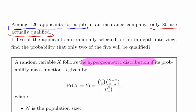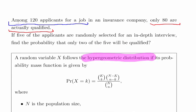This is a case of using the hypergeometric distribution. N is the total population size and K is the total sample size of one particular category, the category of interest which is the number of qualified applicants.